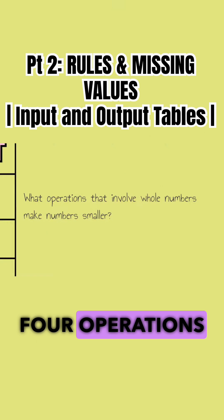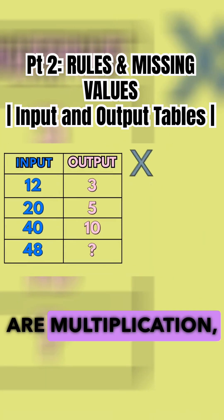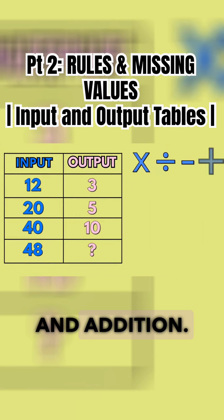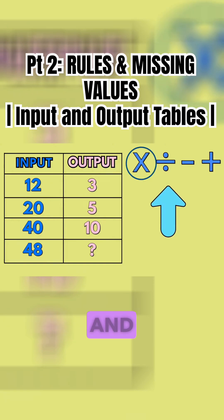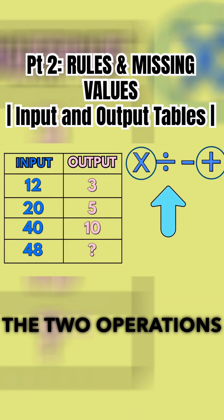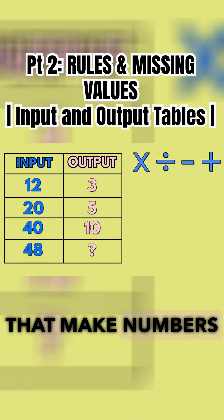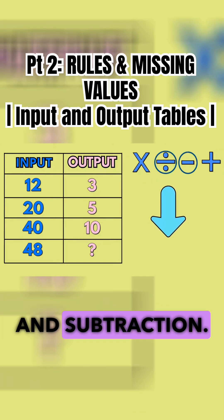The four operations we have in math are multiplication, division, subtraction, and addition. The two operations that make numbers larger are multiplication and addition. The two operations that make numbers smaller are division and subtraction.